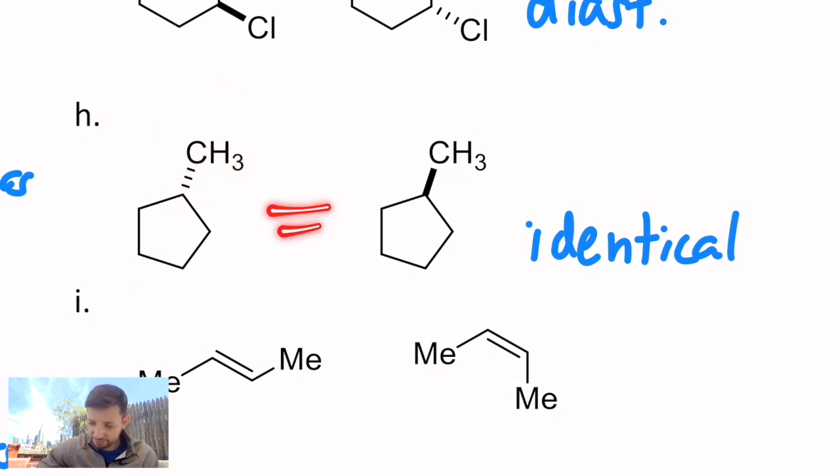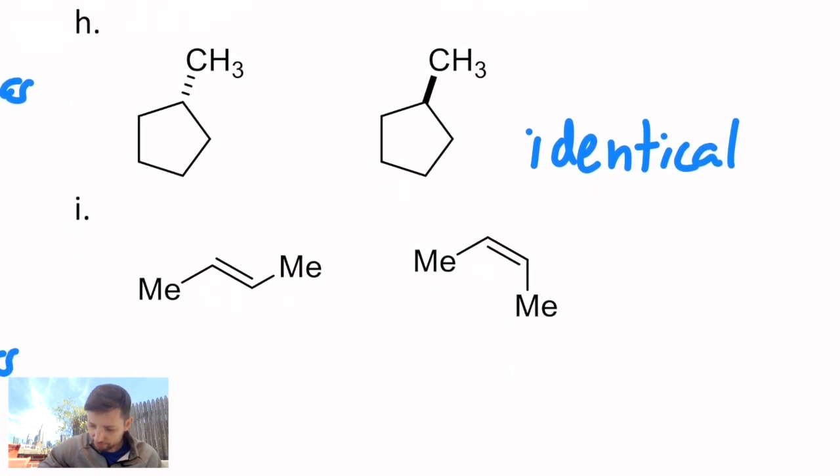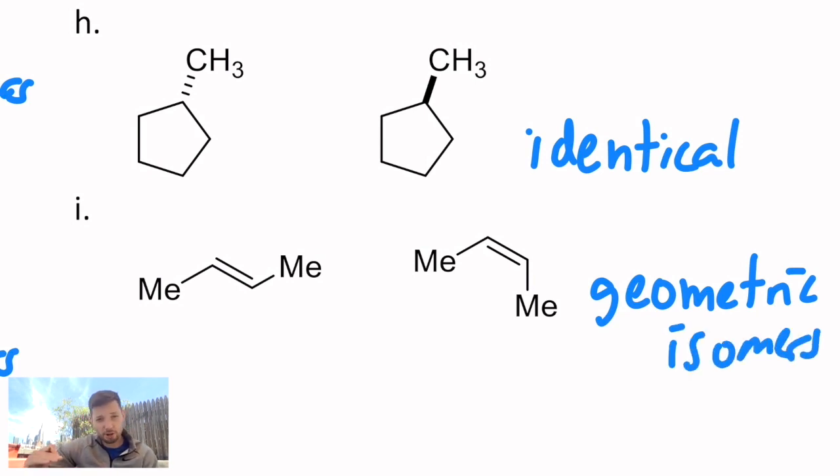And lastly, I is a pair of geometric isomers. Geometric isomers technically count as a pair of diastereomers. They actually fall under that category, if you think about it, because they are stereoisomers of each other, but they're not mirror images. So they count as diastereomers, but I prefer to classify them as geometric isomers, because it really makes me remember that these are alkene isomers, trans and cis, respectively.